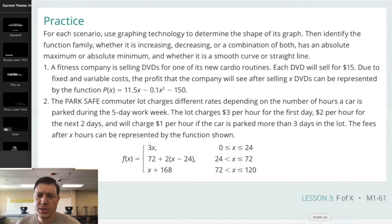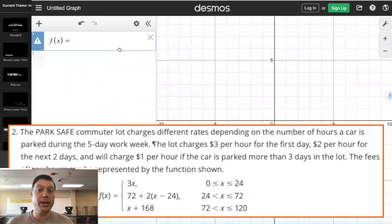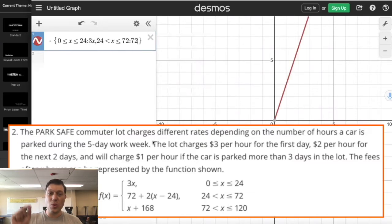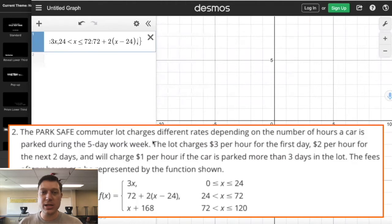Number two says the park safe commuter lot charges different rates depending on the number of hours a car is parked. Hours is the key thing during the next five days. This notation is the way that you do a piecewise function in Desmos. Really, really like code heavy stuff.